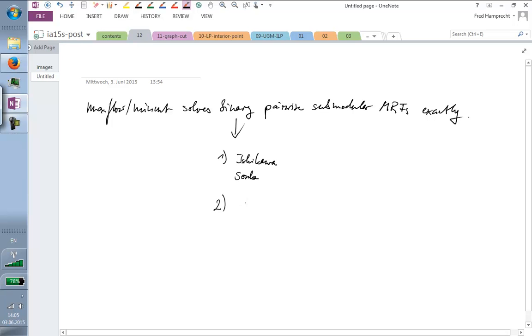This will allow us to do exact inference if the potential obeys a specific form. Then we will look at move-making algorithms, in particular at alpha expansion.